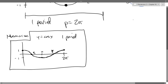This is the period that I want you to memorize for the cosine graph right here. So this is our cosine graph, and there are five points on it. The y-values are 1, 0, and negative 1.